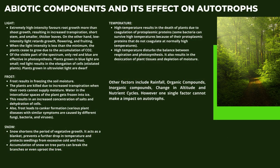Having learnt about the biotic components, let us now learn about the abiotic components and their impact on autotrophs. Let us start with light. Extremely high light intensity favours root growth more than shoot growth, resulting in increased transpiration, short stems, and smaller, thicker leaves. On the other hand, low intensity light retards growth, flowering, and fruiting. When the light intensity is less than the minimum, plants cease to grow due to the accumulation of CO₂.